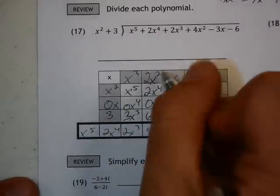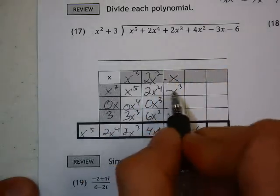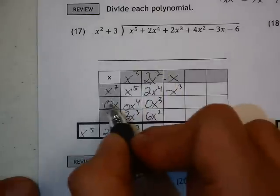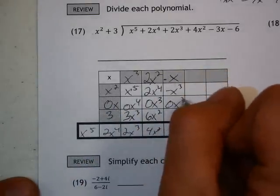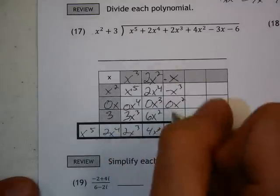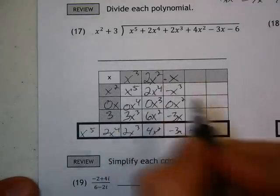Negative x times x squared, or sorry, negative x times x squared is negative x cubed. Negative times 0 is just going to be 0x squared. Negative x times 3 is negative 3x.